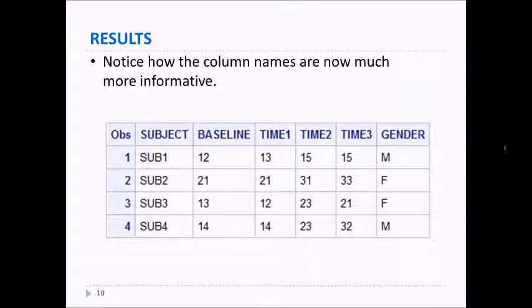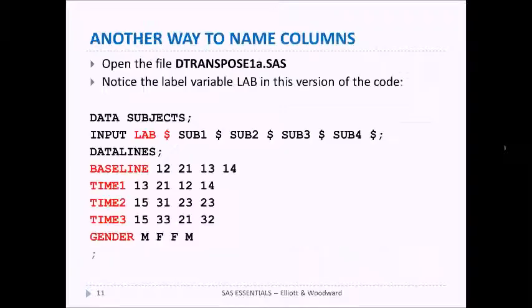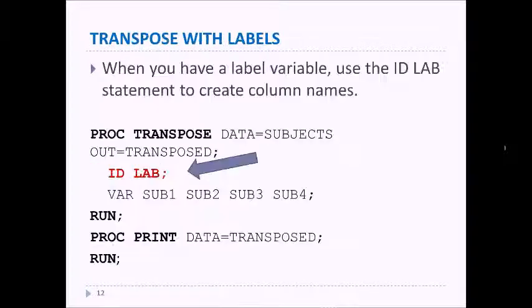Another way to name the columns is when you already have some variable, such as in this example where we have a variable named LAB or label. Notice here that the LAB variable is the actual labels that we want for the columns. So if we have a data set that looks like this, then we can use the ID statement in PROC TRANSPOSE as shown here.